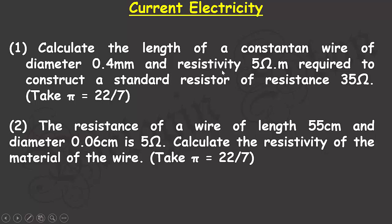I'll read out the first question: calculate the length of a constantan wire of diameter 0.4 millimeters and resistivity 5 ohm-meters, required to construct a standard resistor of resistance 35 ohms. Pi is to be taken as 22 divided by 7.